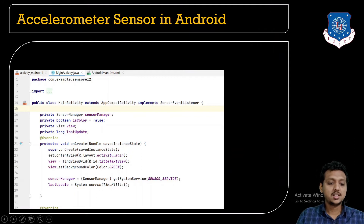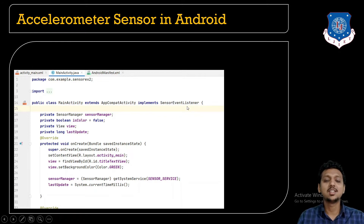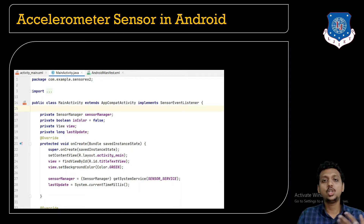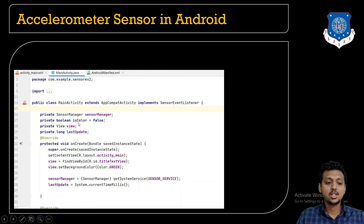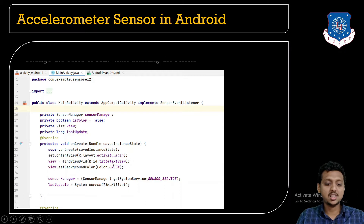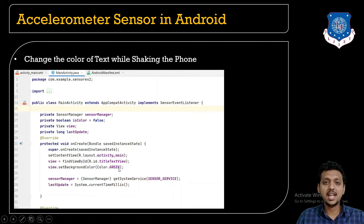This is my first class, MainActivity.java, which should extend AppCompatActivity and now we are going to implement the SensorEventListener. Whenever you try to implement the SensorEventListener, some methods you need to override as well. First, there is the SensorManager class, a boolean 'color' which is by default false, a View object, and a long variable 'lastUpdate'. The background color of the text view is set as green.